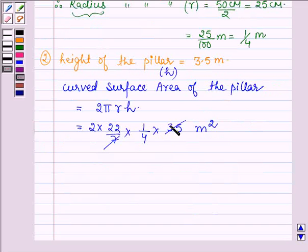Calculating this gives us 5.5 m². This is the curved surface area of the pillar.